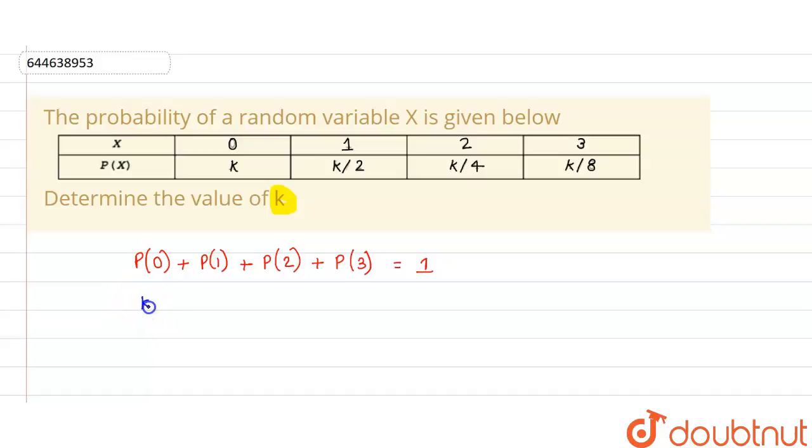that is equal to k, probability of one that is k by two, probability of two that is k by four, and probability of three that is k by eight. That is equal to one. So now we will take